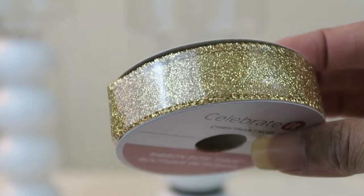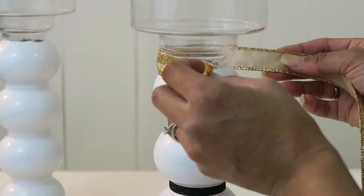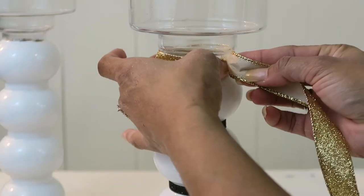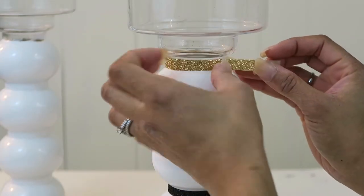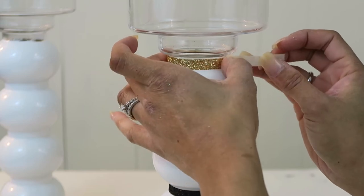Once I did that, I glued that on in the same way I did with the other ribbon. I then tied the bow and glued that on as well.